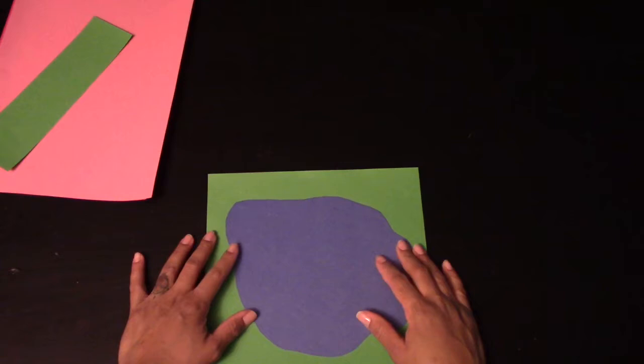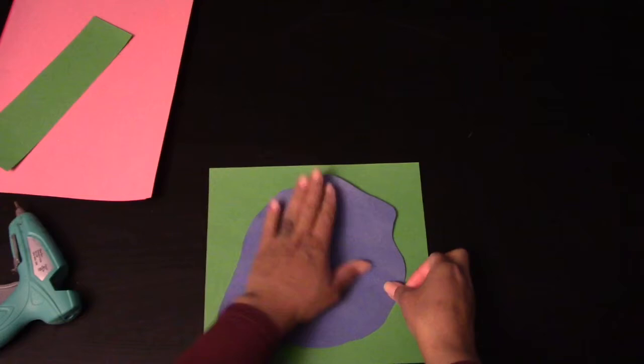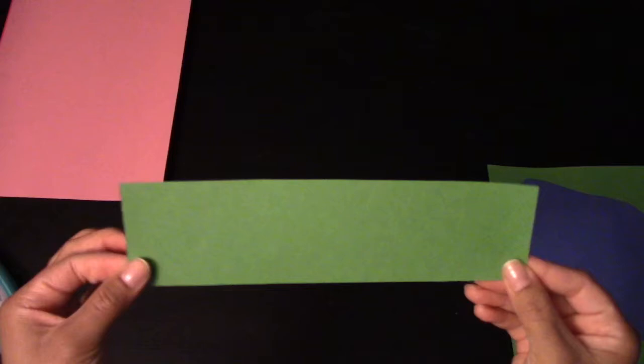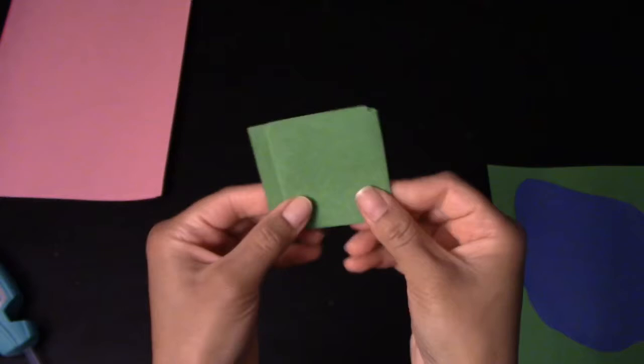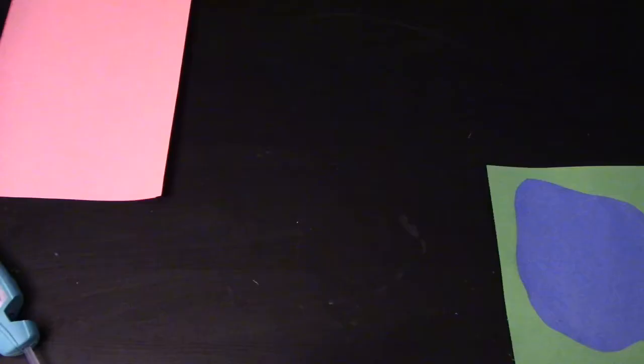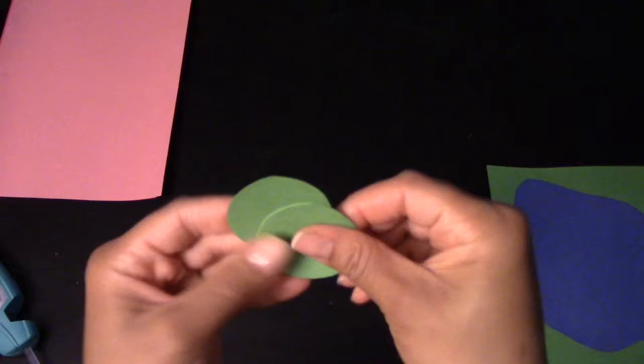Next, go ahead and take that strip of green that you cut out and you're going to fold that three times. After you fold them, you can grab your scissors that you will use with a parent and cut a circle out. These are going to be the lily pads. You should have four of them.